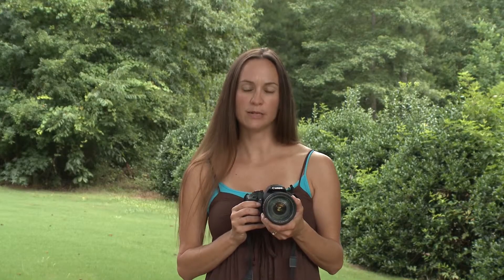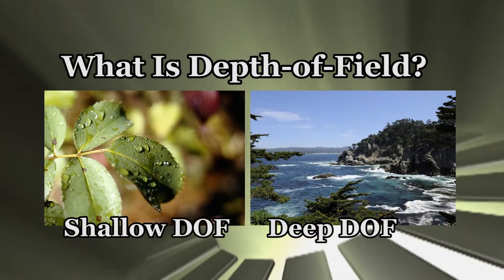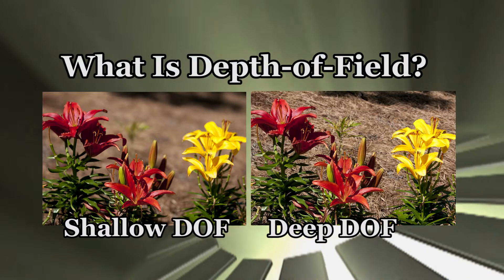Welcome again to Basic Photography 101, photo tip number three: how do you use depth of field? What is depth of field? Depth of field refers to the zone of apparent sharpness that extends ahead of and behind the subject plane upon which you have focused.